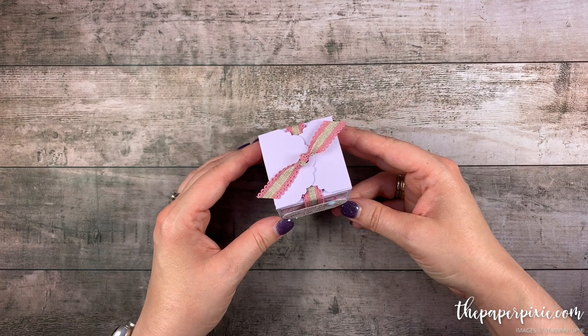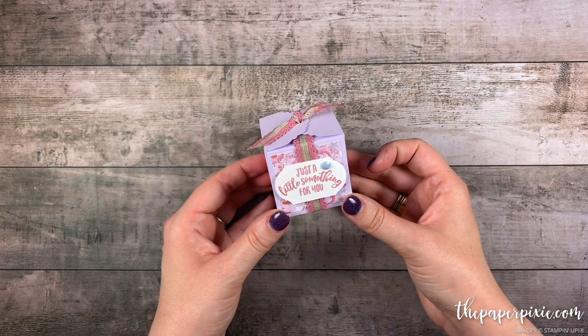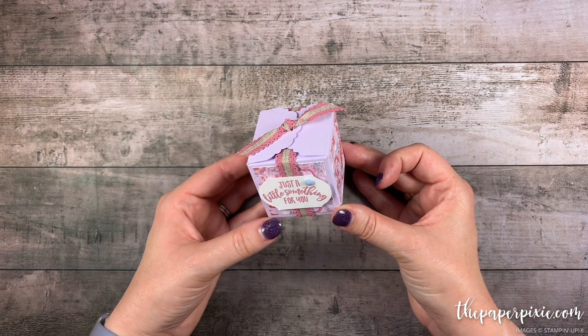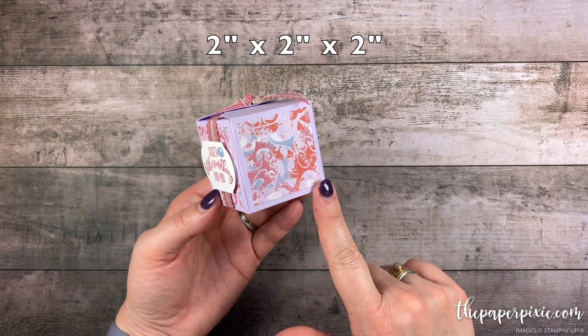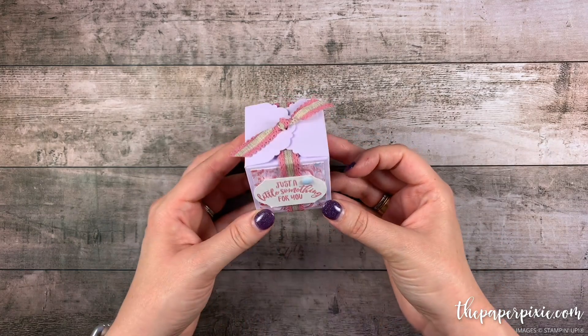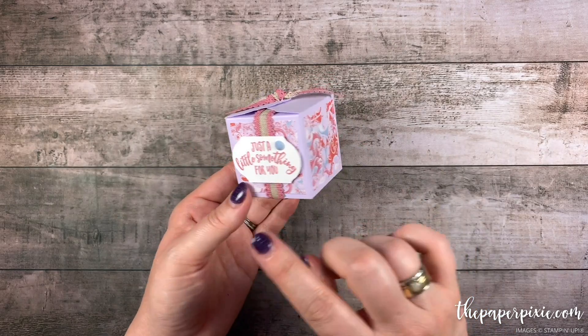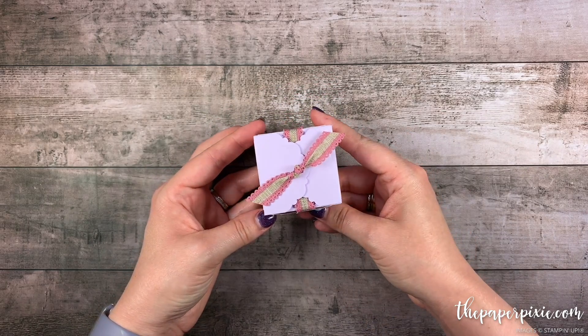In this video tutorial I'm going to show you how to make this delightful tag topper gift box. The finished box size is 2 inches by 2 inches by 2 inches and we're using some brand new products. I love the colors and I just love the way that this box goes together.